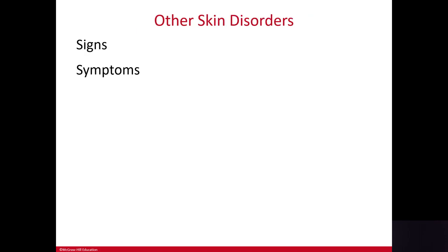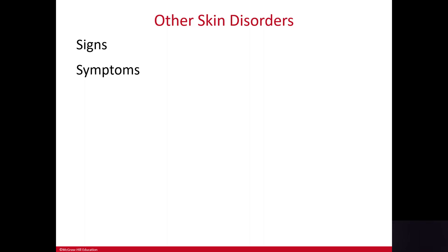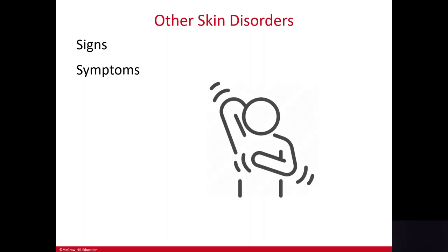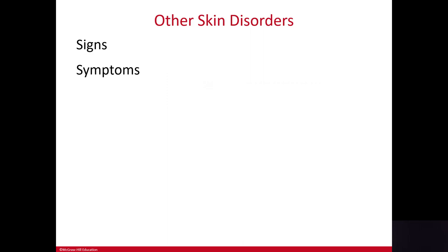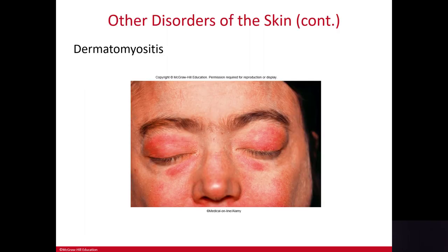This last section discusses manifestations of internal diseases and the distinction between signs and symptoms. A sign is something you can see — for example, a rash. A symptom is something the patient experiences or reports, like itching, which you cannot see but the patient can tell you about. So a sign is something observable; a symptom is something the patient is experiencing, such as itching or pain.